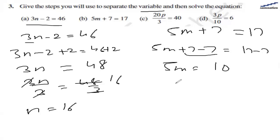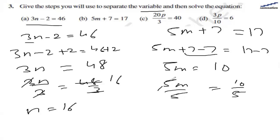Now we have to divide by 5 from both sides. So we have 5m divided by 5 and 10 divided by 5. The 5s cancel and give us 1, and 10 divided by 5 is 2. So m equals 2 is the solution for part (b).